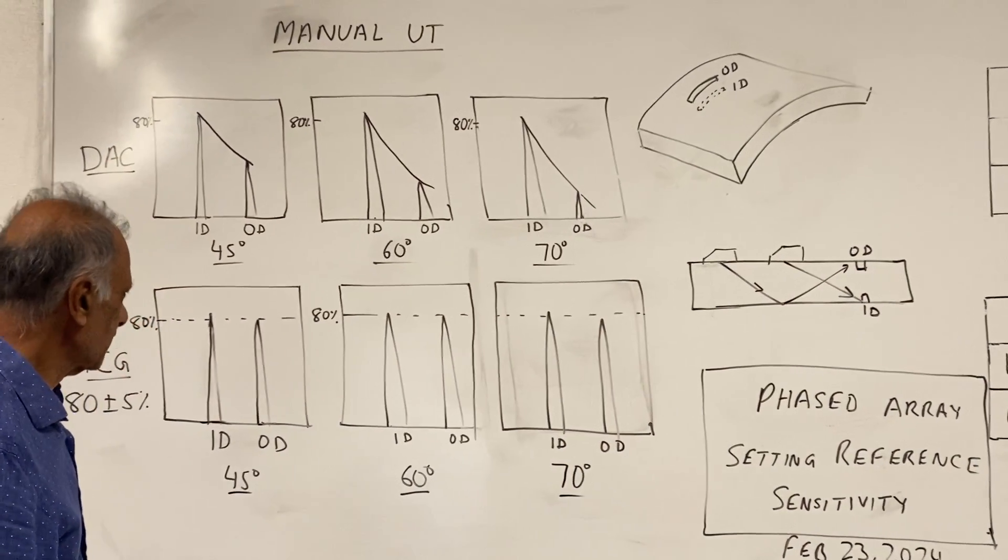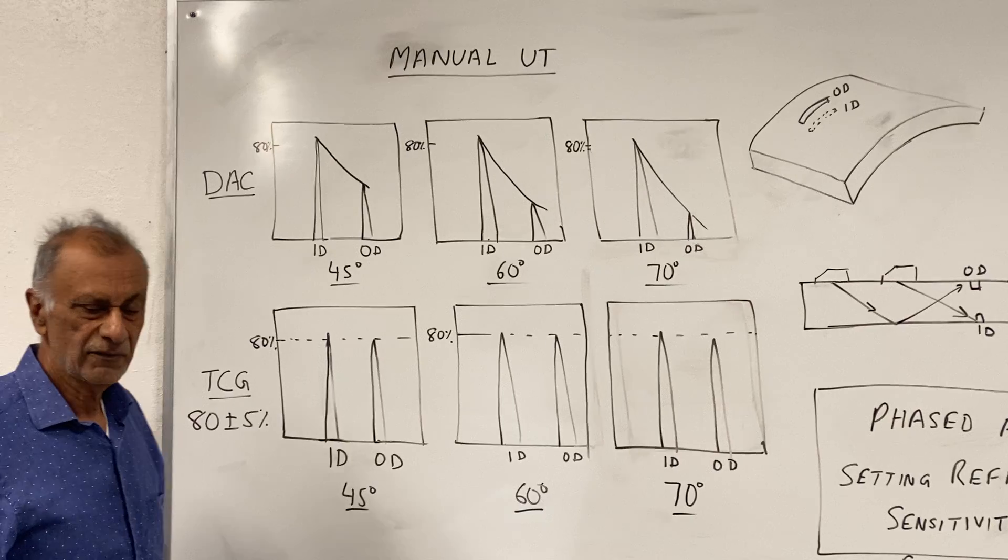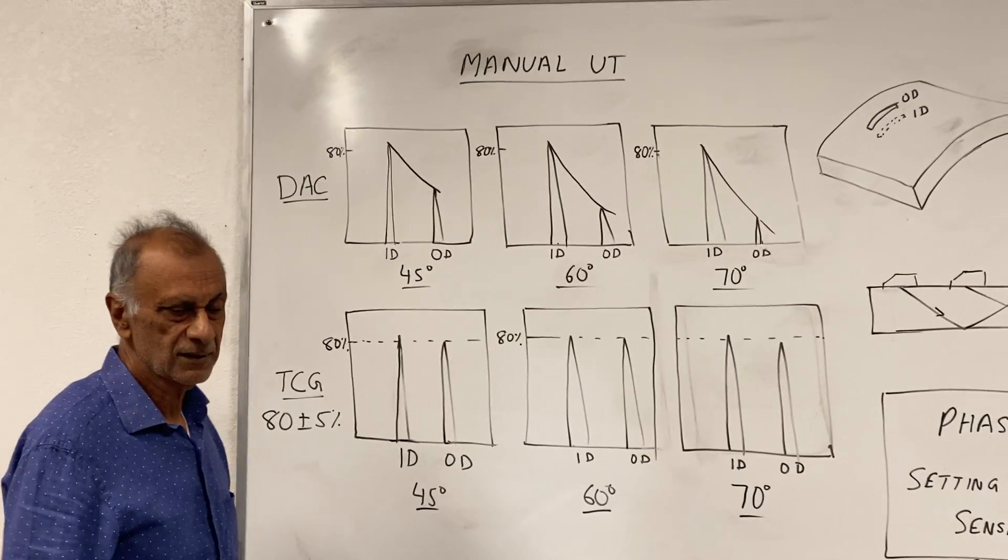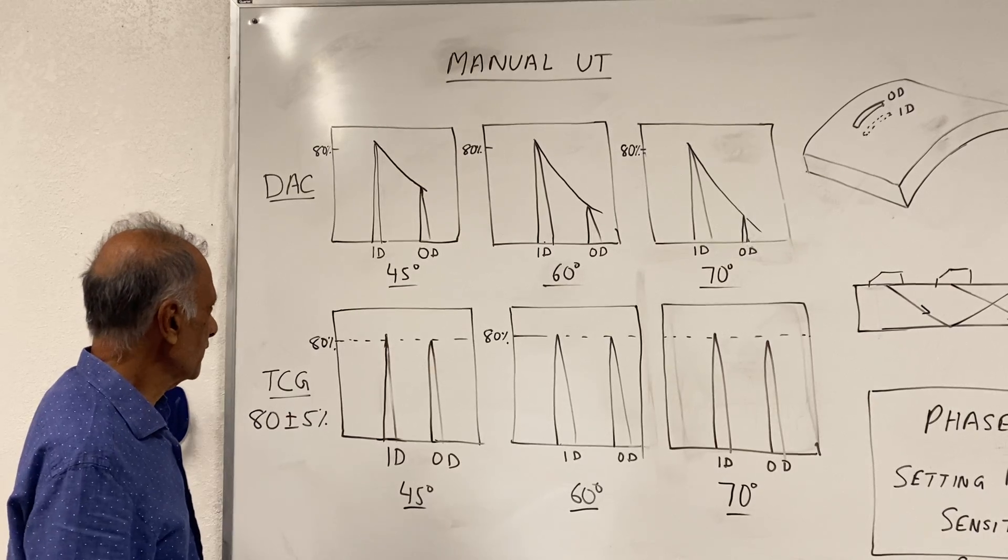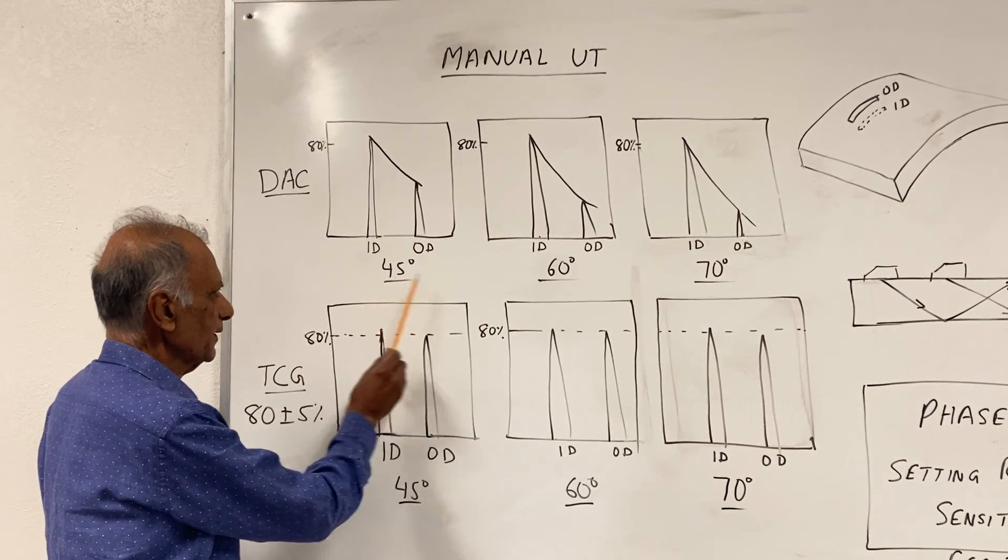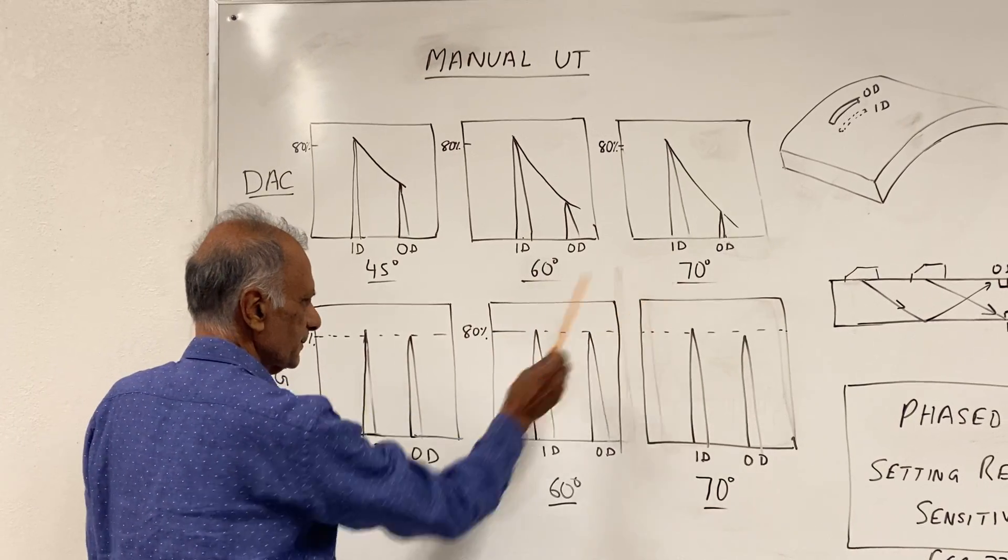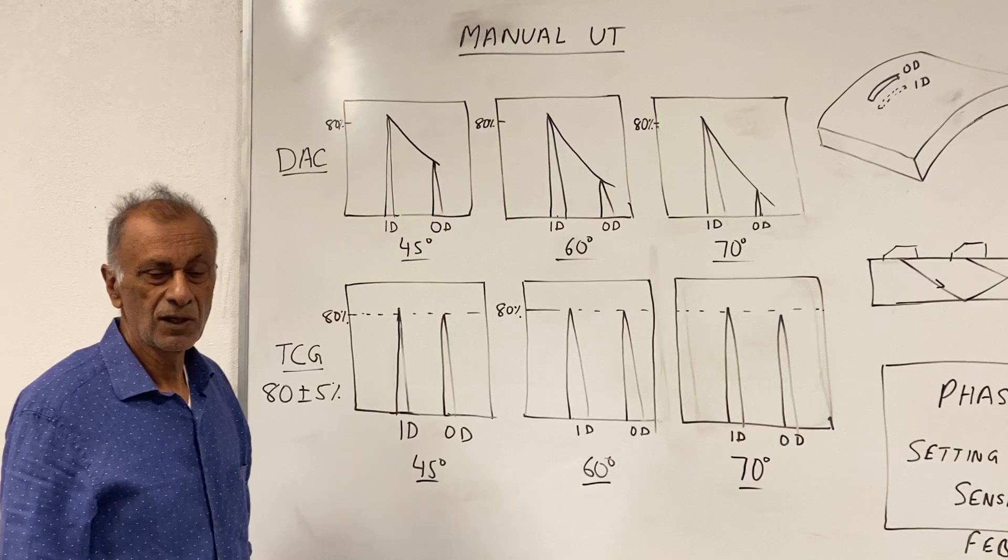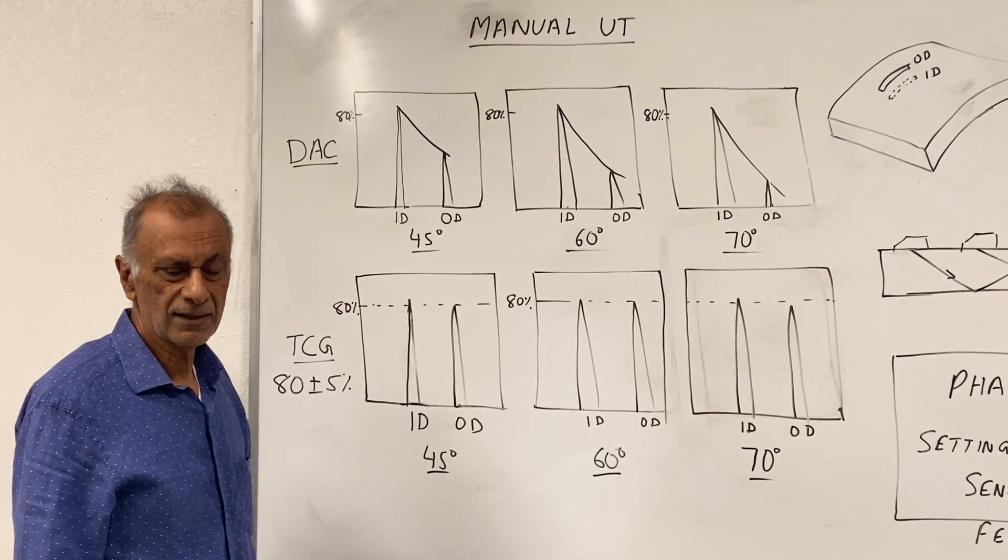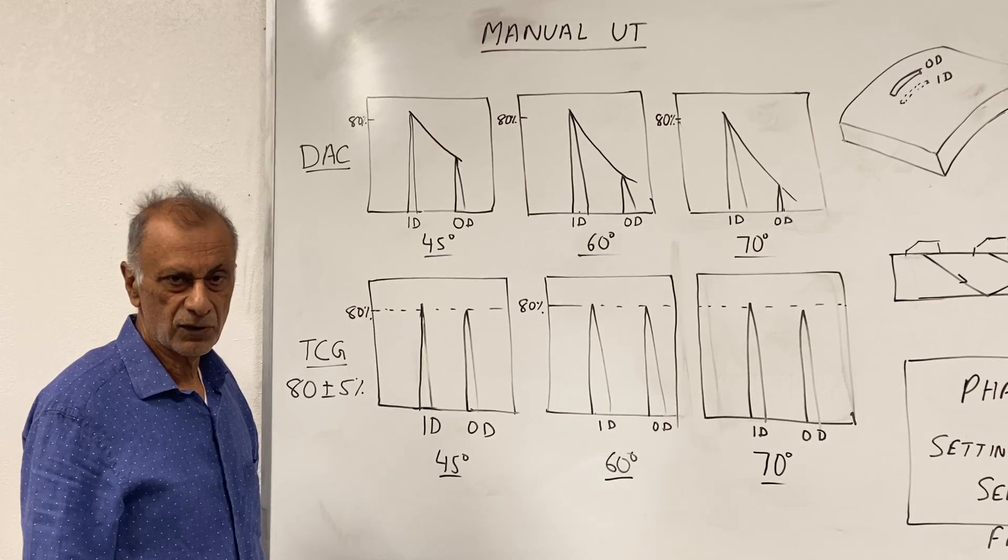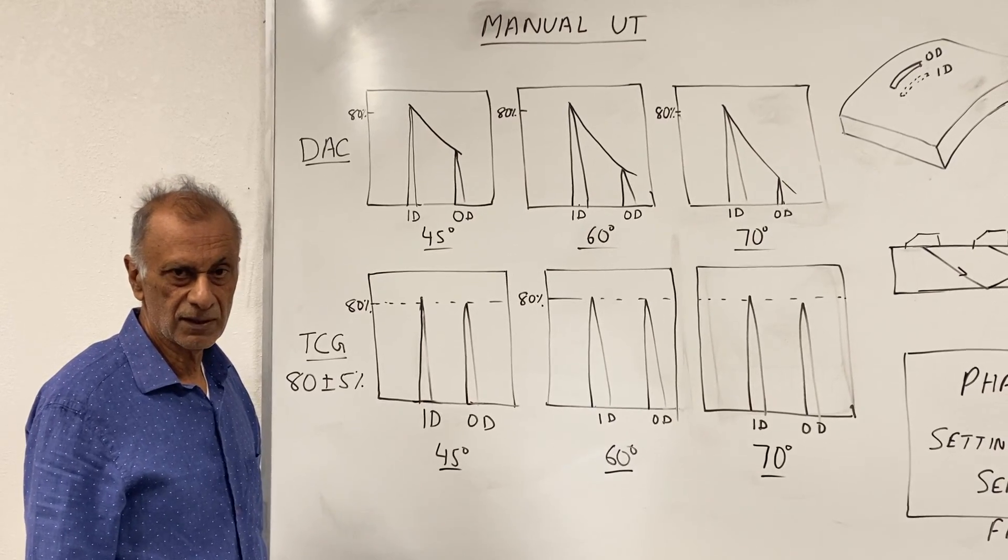Now let's come here to the conventional manual UT using the three probes. So here we have three angles: 45 degrees, 60 degrees, and 70 degrees. The first step is that we set up what is called our distance amplitude correction curve, which compensates for the beam spread of the probe.